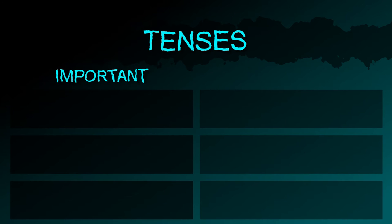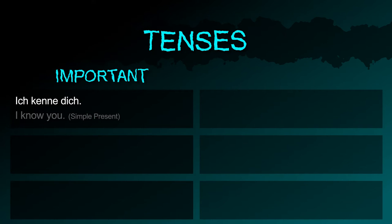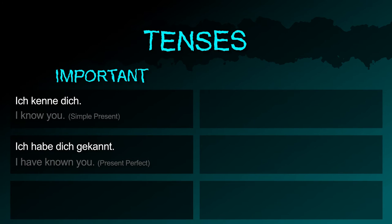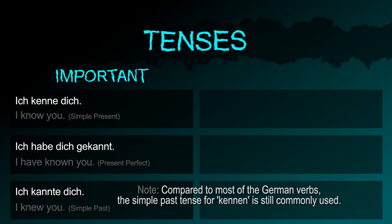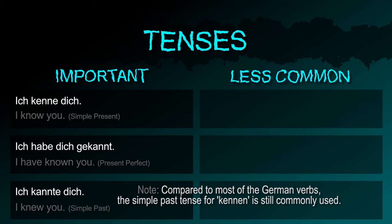Important tenses: present — 'Ich kenne dich'; perfect — 'Ich habe dich gekannt'; simple past — 'Ich kannte dich'. Less common tenses include the future forms.